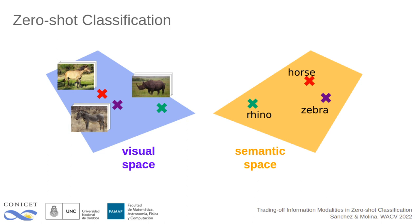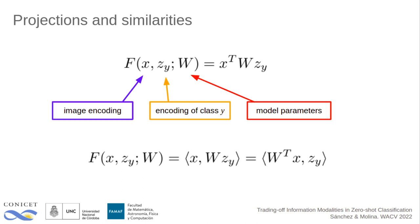Given vectorial representations of images and concepts, a popular approach is to define a compatibility score as a simple bilinear form. Given the symmetry of the bilinear operator, we can think of it as a two-step process in which we first project one of the modalities into the space of the other and then compute a similarity score on it. The projection step corresponds to the product by W or W transpose, and the similarity computation step to a simple dot product.